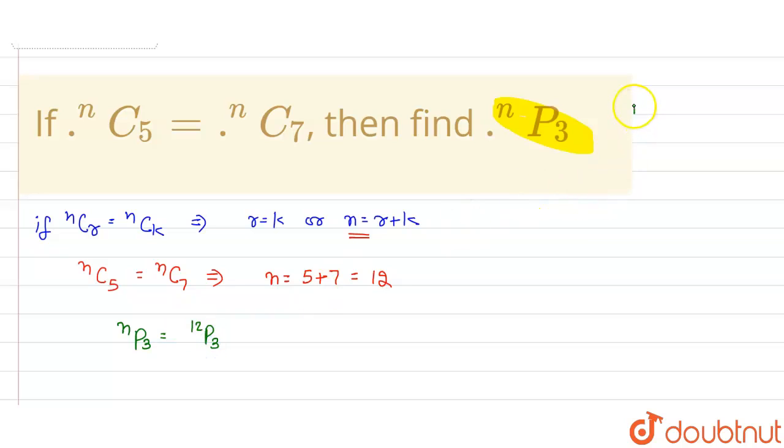Now as we know that nPr is equal to n factorial upon n minus r factorial. So here we will have 12 factorial upon 12 minus 3 factorial, that is 9 factorial. Now we can write 12 factorial as 12 into 11 into 10 into 9 factorial divided by 9 factorial.